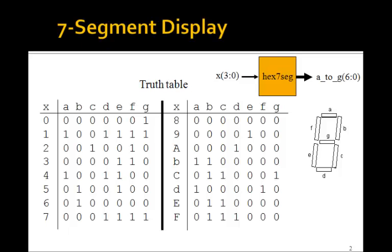In the last lesson, we showed how we got this truth table, where the input x is 0 to f, and the output is a, b, c, d, e, f, g.